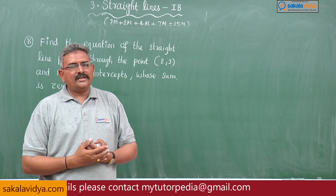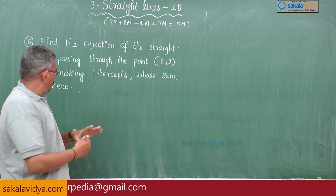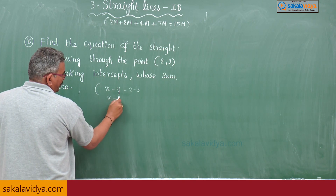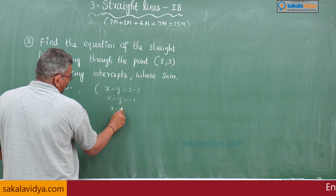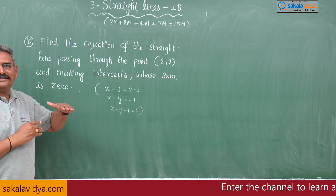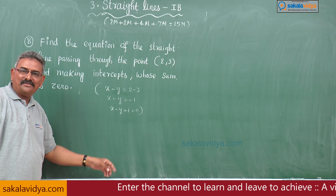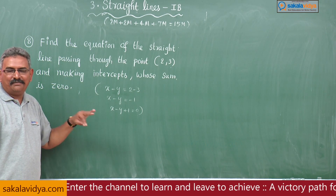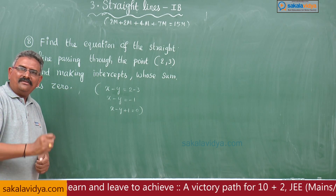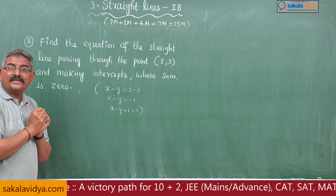So the equation we can take is x minus y equals 2 minus 3, that is minus 1. So x minus y equals minus 1, giving x minus y plus 1 equals 0. This is the strategy for engineering entrance examinations. But my dear students, do not do this in board examination — every step is very important. Even if you know the easy method, do not write those methods in board examinations.